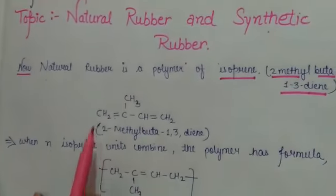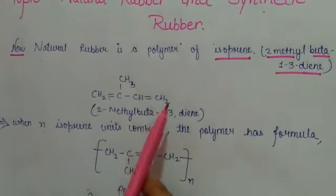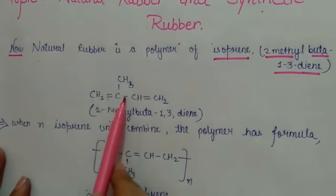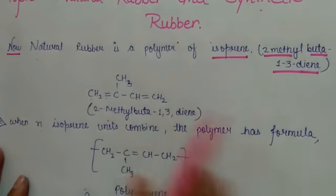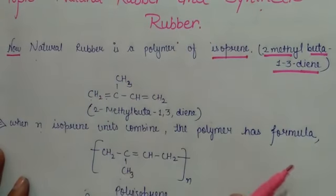Now, the 4-carbon structure is CH2, double bond C, CH, double bond CH2. The second carbon has a methyl group.